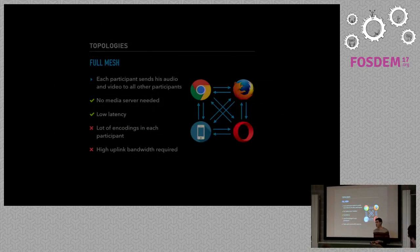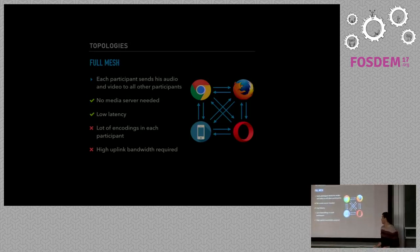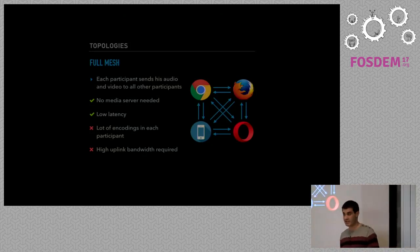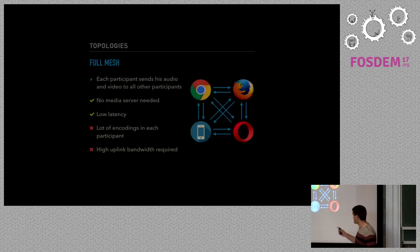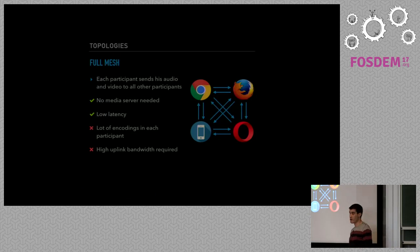The first one is called FullMesh. This is a very interesting multiconference topology because, as you can see, there is no MediaServer. Of course, there is a signaling server somewhere, because there must be a way to make all the participants agree on having a room. But when it comes to media processing — receiving and sending the media packets — in this topology there is no MediaServer. It doesn't scale very well, because each participant must send all their streams, audio and video, to all the other participants, which means a high uplink bandwidth requirement, which is not good for clients.